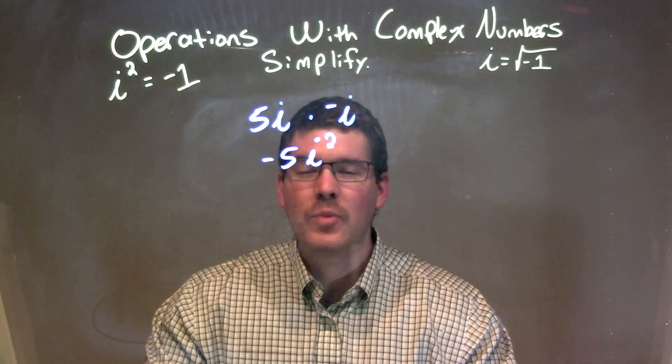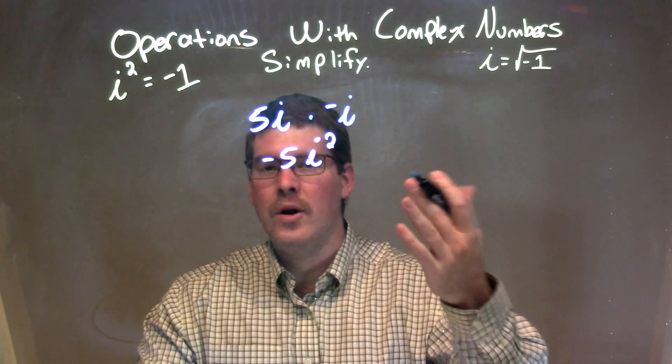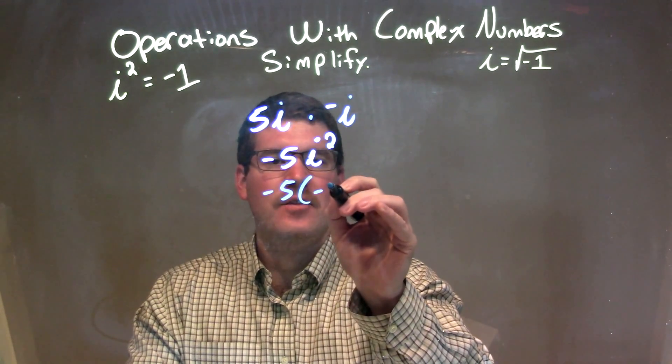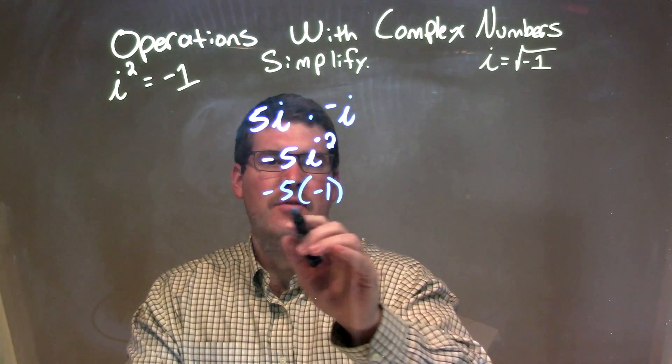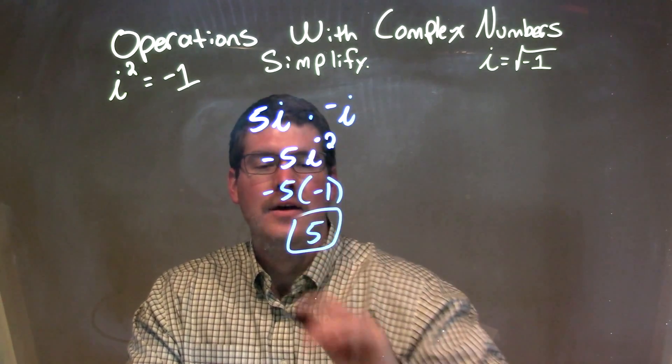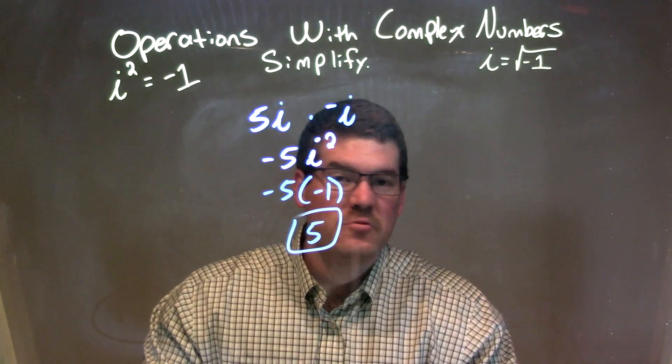Now this becomes tricky though, because we know i squared is negative 1, and we must change that. So we have negative 5 times negative 1, and that's positive 5. So all of this comes down to a final answer of just 5.